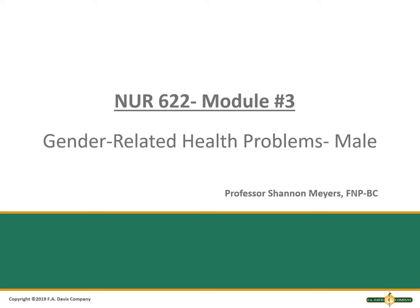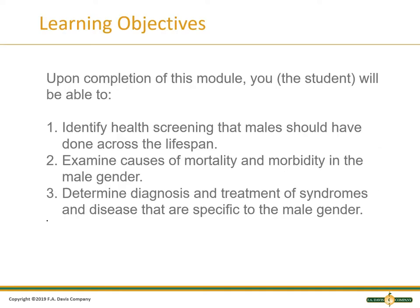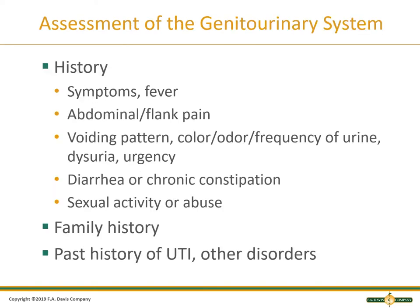This is Nursing 622, Module 3, with gender-related health problems focusing on the male. The objectives are to identify the health screenings males should have, determine the diagnosis and treatment, mortality, and morbidity of the male gender.